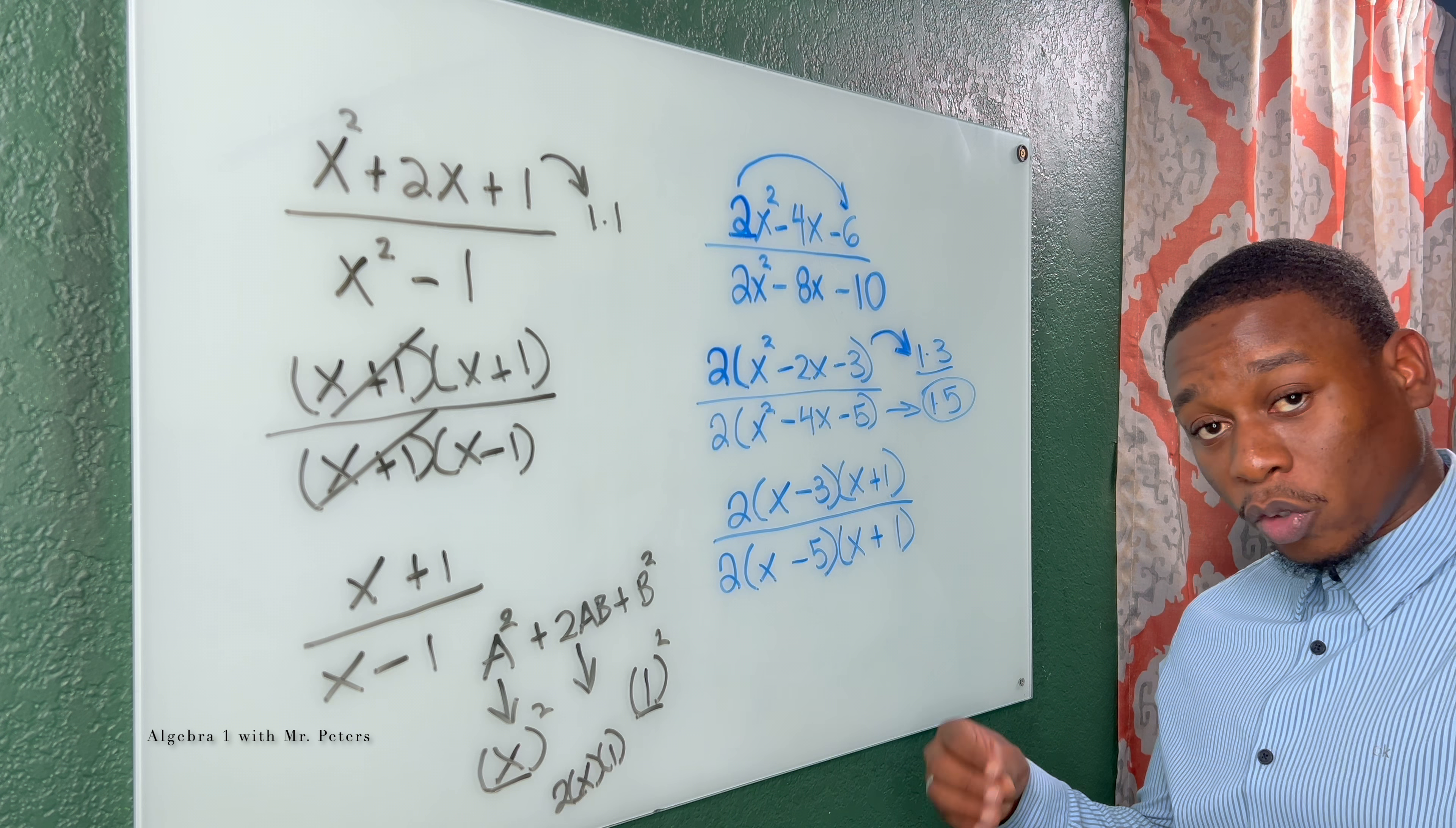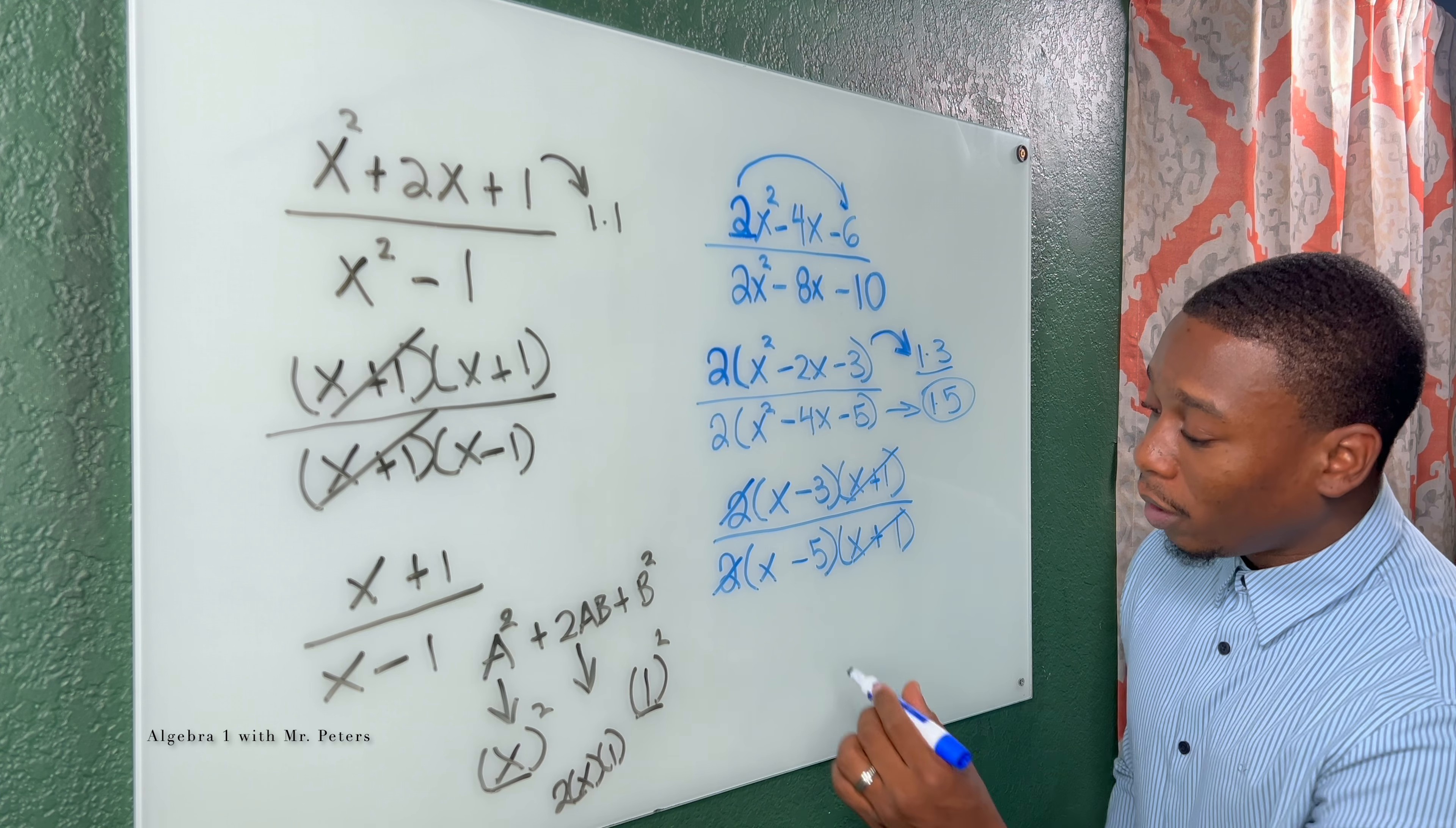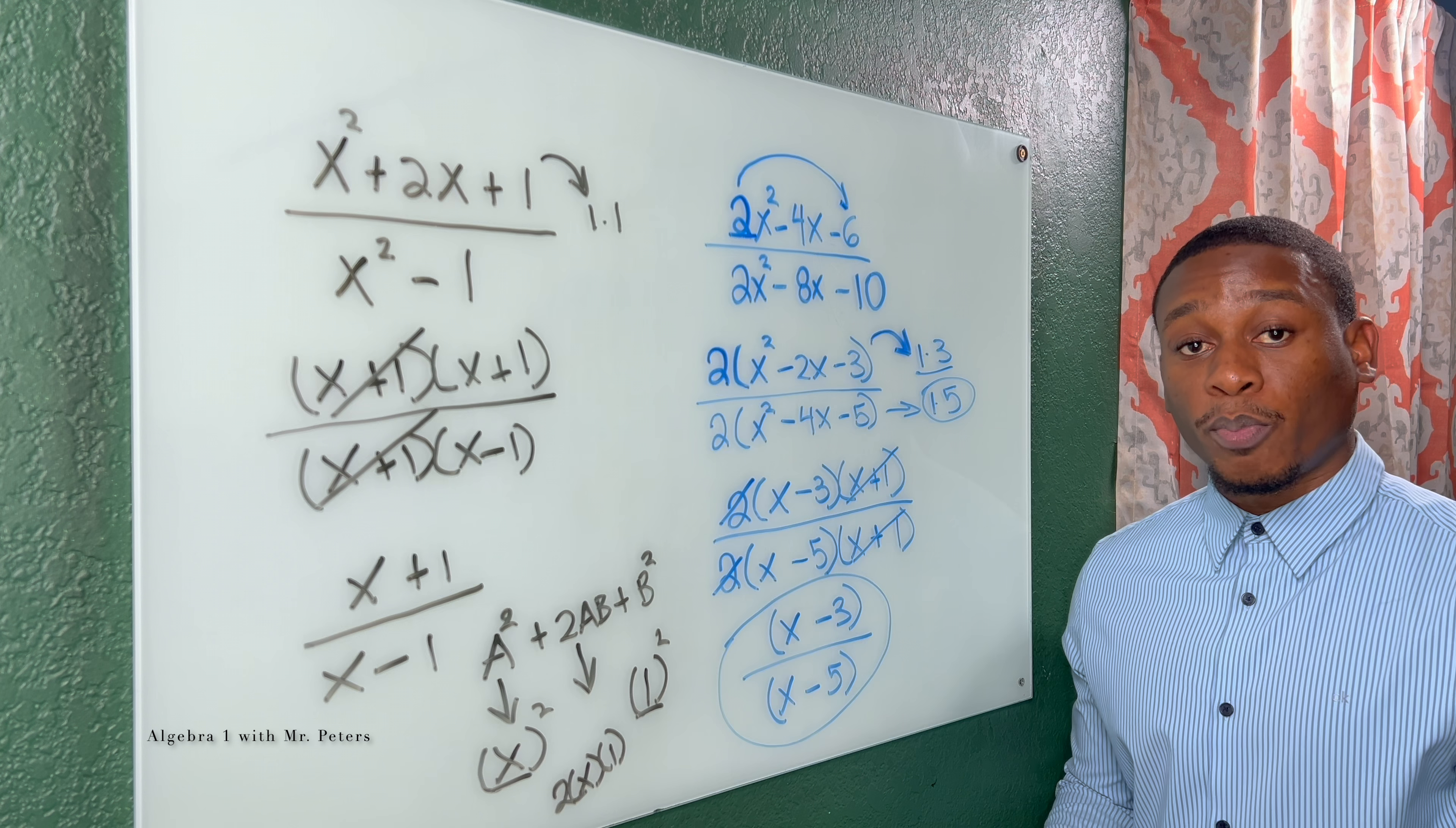And now with this step, we use those fraction properties and cancel out common factors. So we could cancel out the 2s, and we could cancel out x plus 1 with x plus 1. And what we're left with is going to be x minus 3 all over x minus 5. And this will be our final answer for this problem.